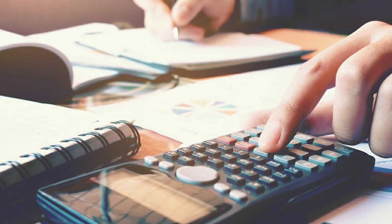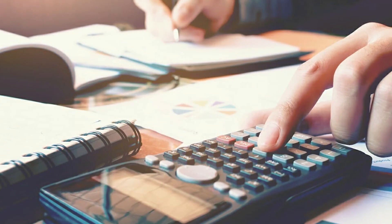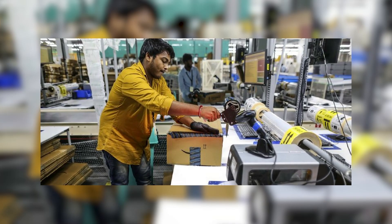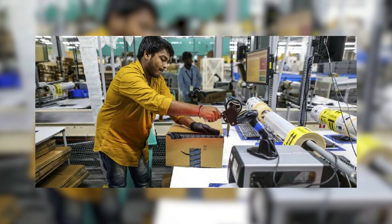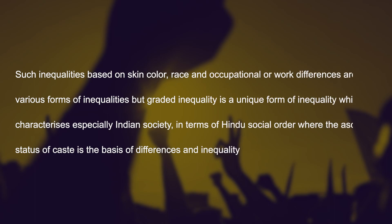At the administrative and professional levels of industrial societies too, there are superordinates — administrative, professional allies and bureaucrats — and subordinates who work under them, forming unequal classes where inequality is based on the nature of productive work. Such inequalities based on skin color, race and occupation are various forms of inequality. But graded inequality is a unique form that characterizes especially Indian society in terms of the Hindu social order, where the ascribed status of caste is the basis of differences and inequality.